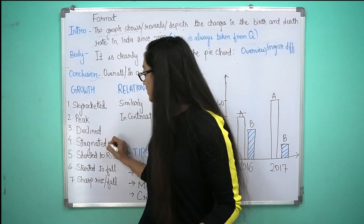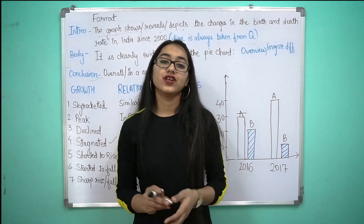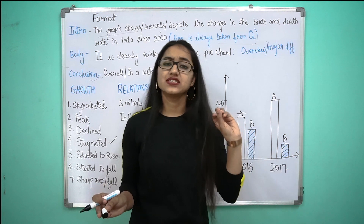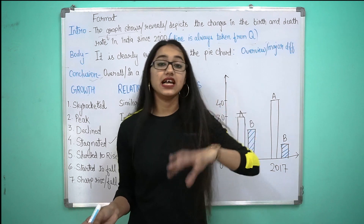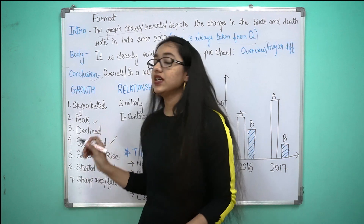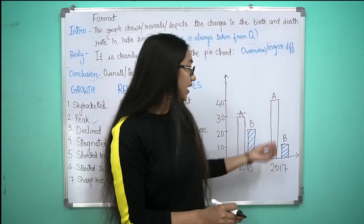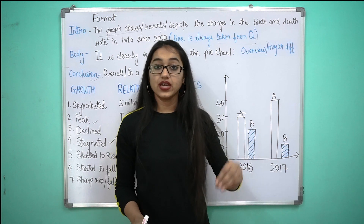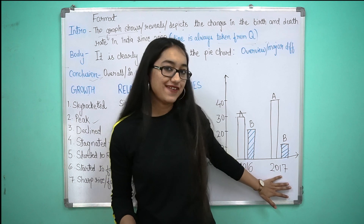अब 'stagnant' कब use करते हैं? Stagnant use करते हैं जब इस साल भी मेरी sales उतनी ही हो जितनी पिछले साल थी — जैसे इस साल भी 10,000 products बेचे और पिछले साल भी 10,000 बेचे थे — तो growth stagnant होगी, मतलब पिछले साल भी उतनी थी इस साल भी उतनी है। 'Peak' हम कब use करते हैं? जब किसी particular period में maximum sales हुई हो — जैसे product A की maximum sales 2017 में थी, तो हम लिखेंगे: 'Product A की sales उसके peak पे थी in the year 2017.'